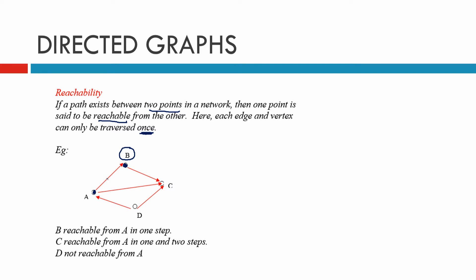B is reachable from A in one step. So if we start at A, we can get to B in just one step — one edge. C is reachable from A in one and two steps: we can go from A to B and then B to C, or directly from A to C. And D is not reachable from A at all, because there's nothing that comes into D — it just leads out from D.